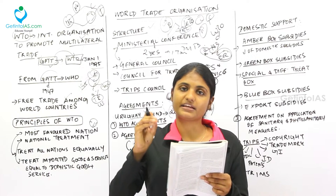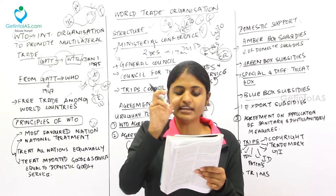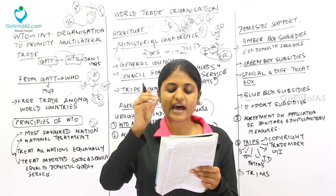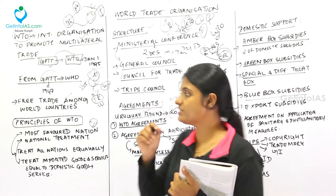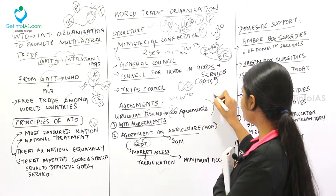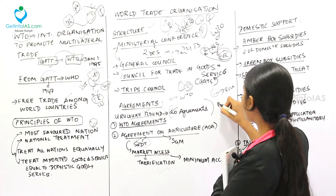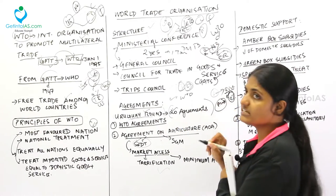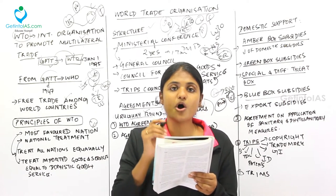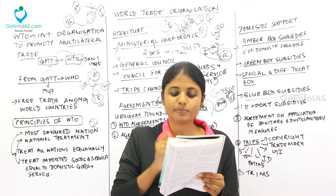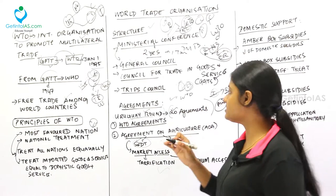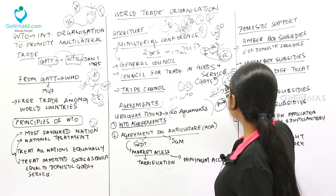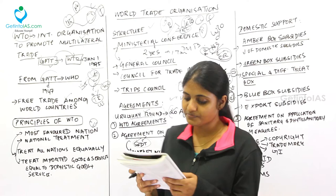Under market access there are two provisions: tarification and tariff reduction, and minimum market access. Tarification means converting non-tariff barriers into tariffs to ensure the same level of protection. Minimum access calls for at least a minimum of 5% of imported agricultural products in domestic consumption, meaning a country must import at least 5% from a respective country relating to agricultural goods.